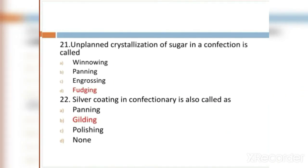MCQ 21: Unplanned crystallization of sugar in a confection is called: Option A: vining. Option B: panning. Option C: embossing. Option D: fudging. Option D, fudging, is the right answer.